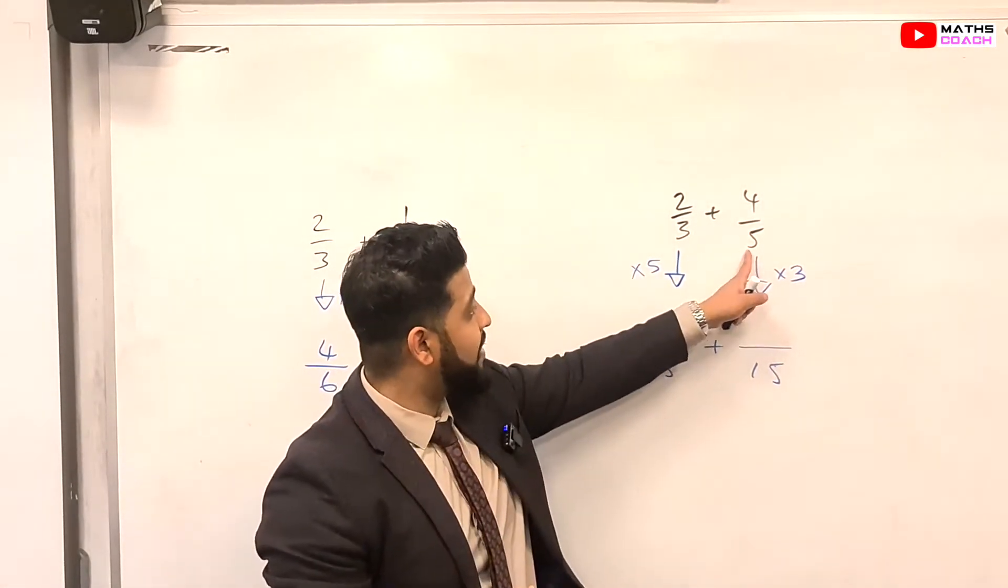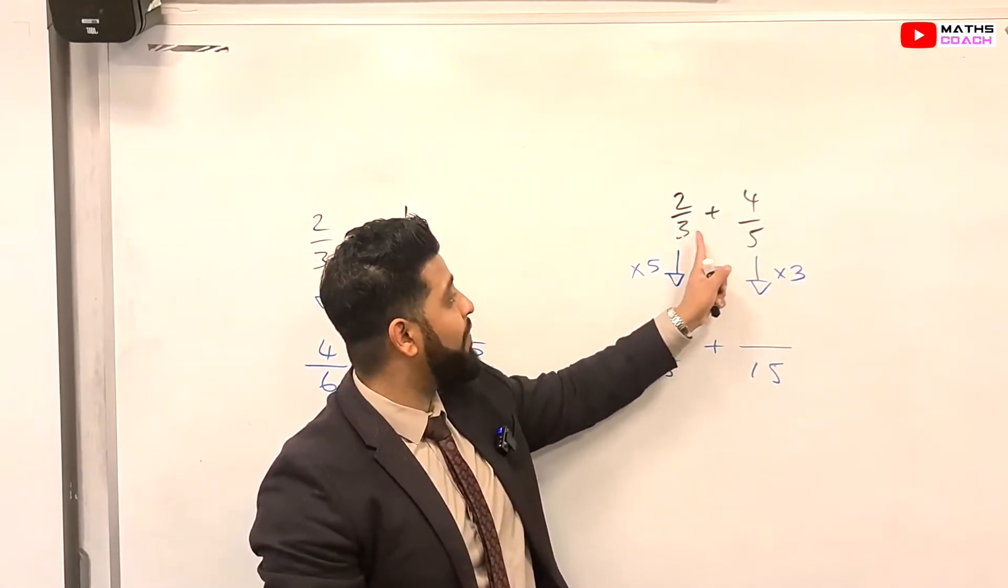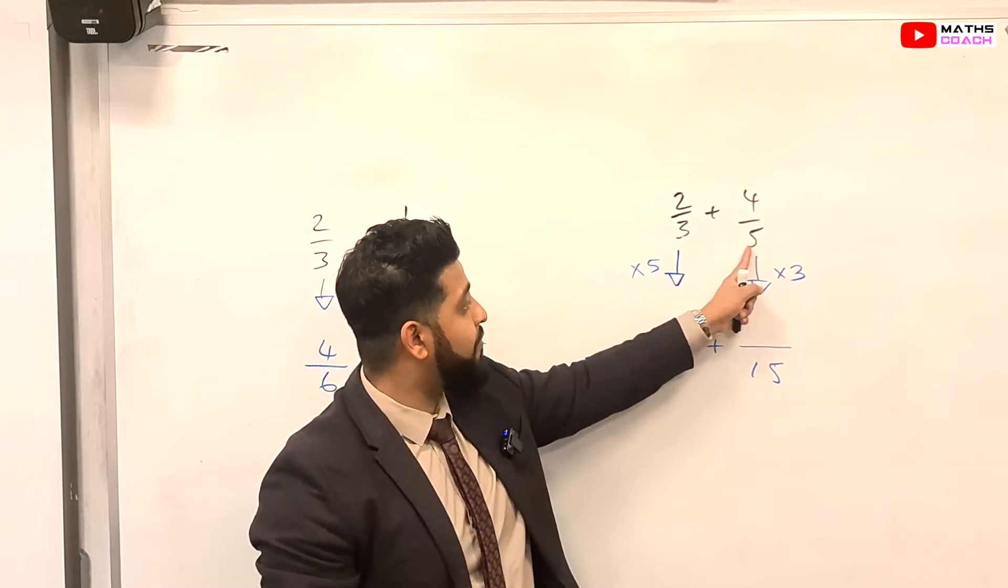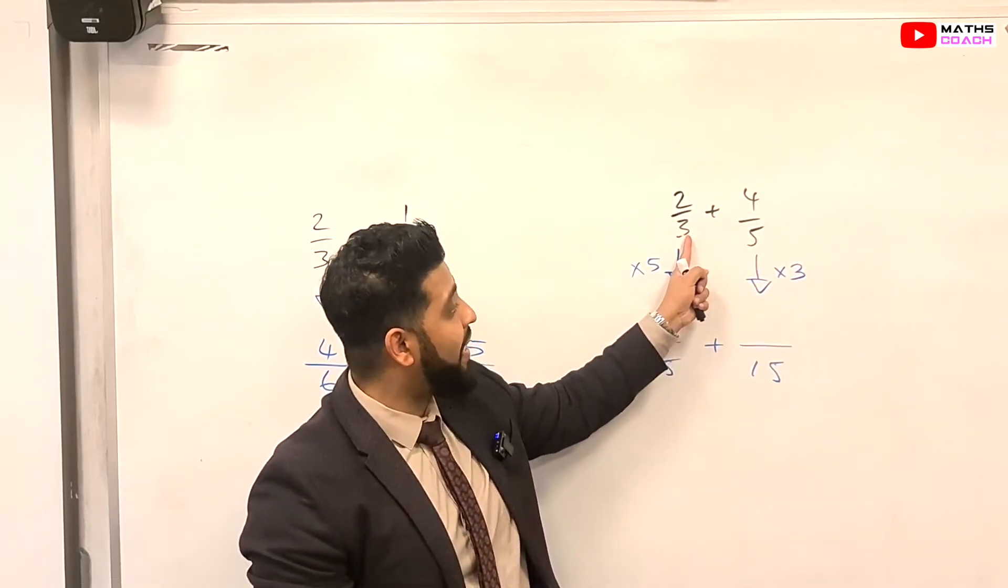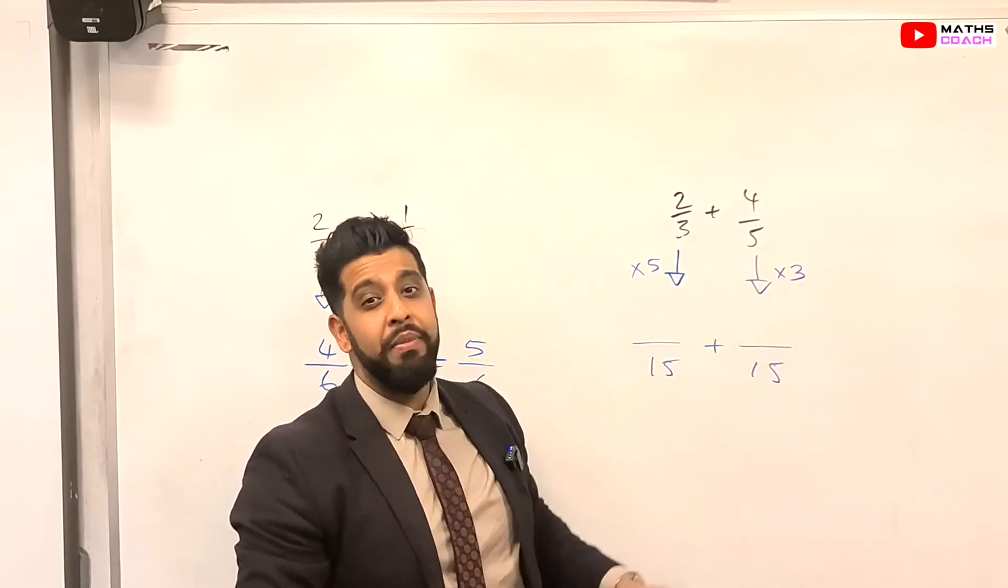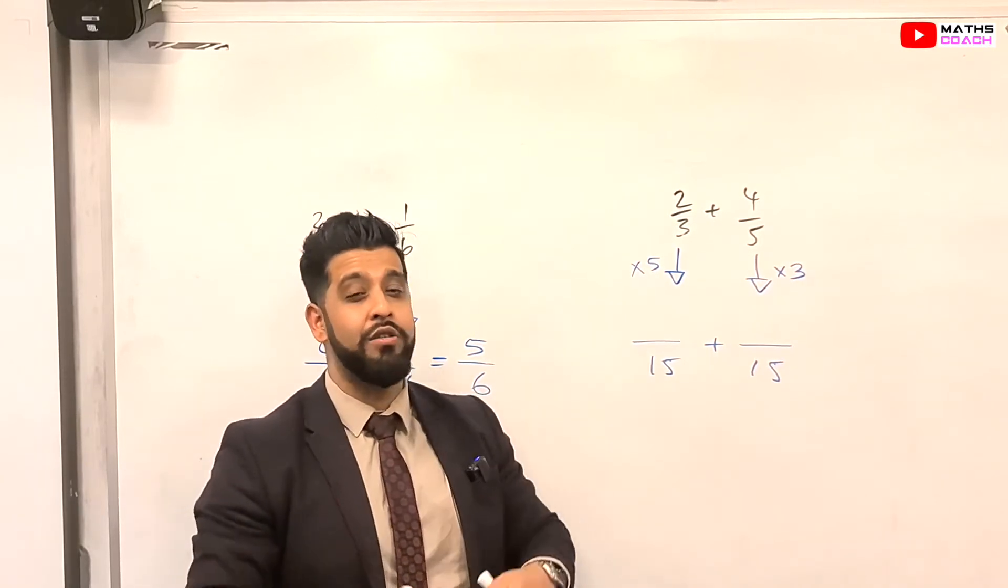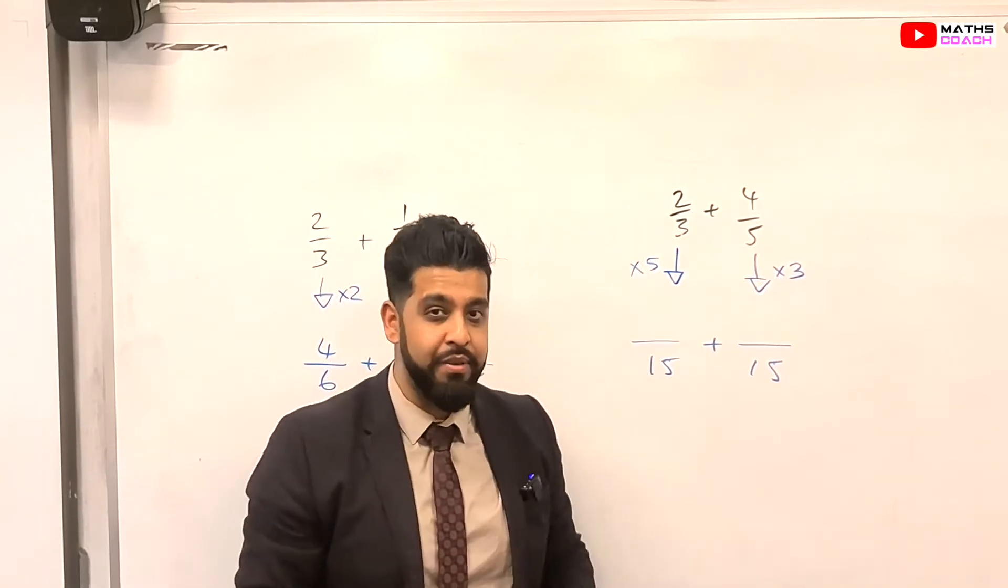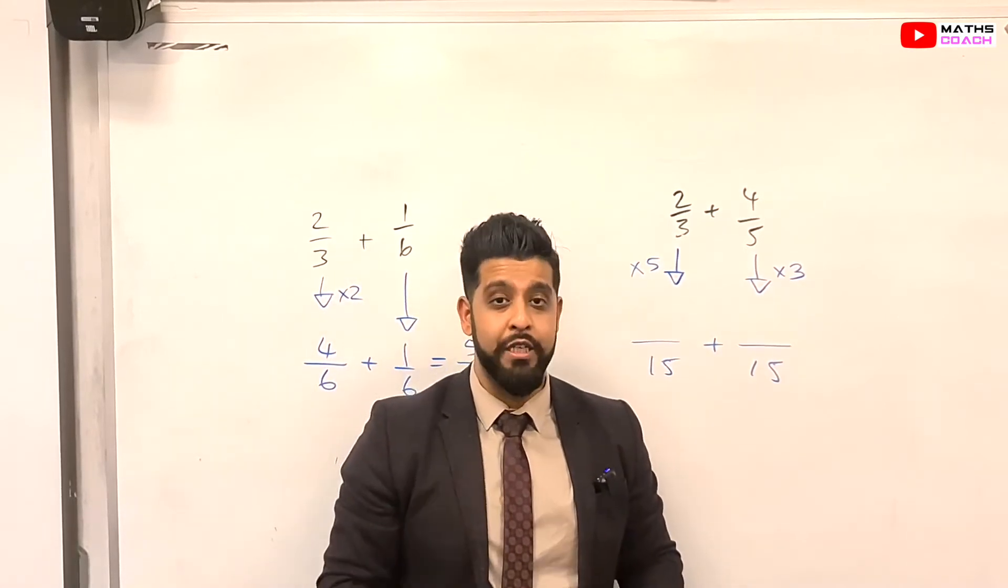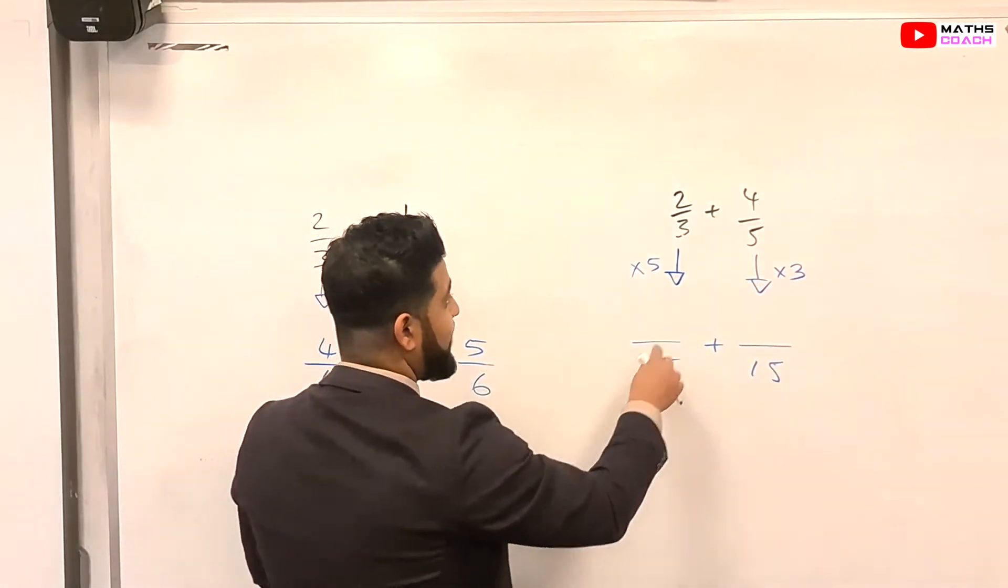Sometimes you will notice that you can actually just multiply with the opposite number. So here, you had 3 and 5, so you multiply this one by 5 and this one by 3. But it's not always wise to do that because sometimes you can end up with really, really big numbers. And it's better just to look for the lowest common multiple.